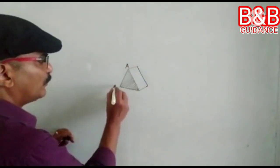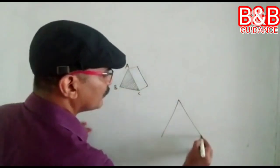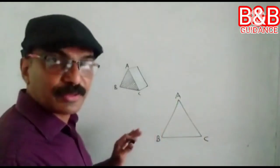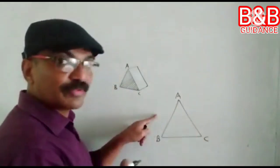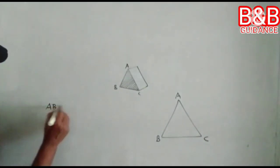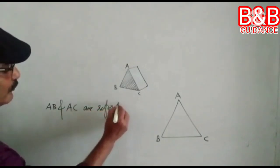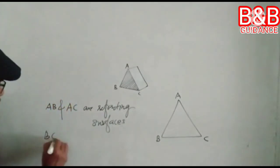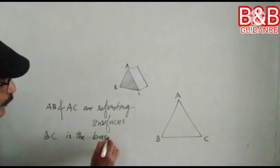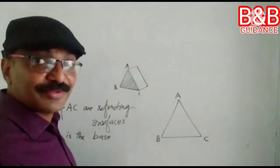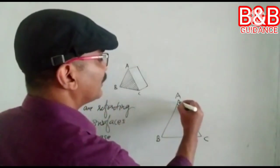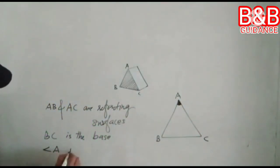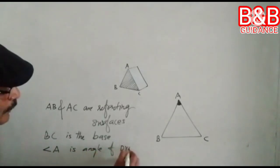We will learn more about that in our next class. When you draw the diagram of a prism, we are not going to draw a three-dimensional diagram. Instead, we will draw one triangle. This is A, B, C. AB represents one refracting surface; AC represents another refracting surface. AB and AC are the refracting surfaces.